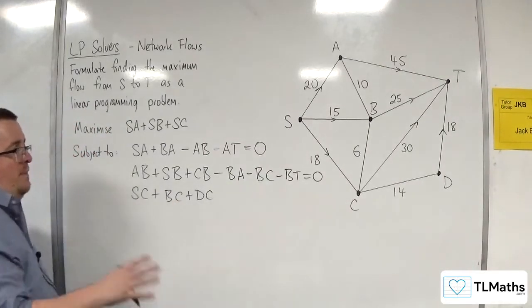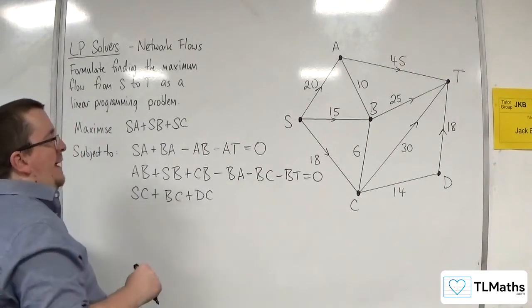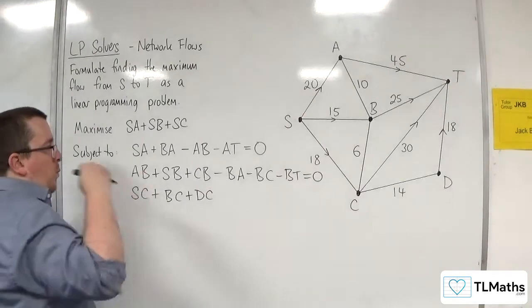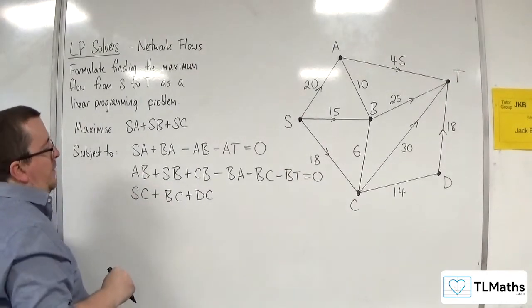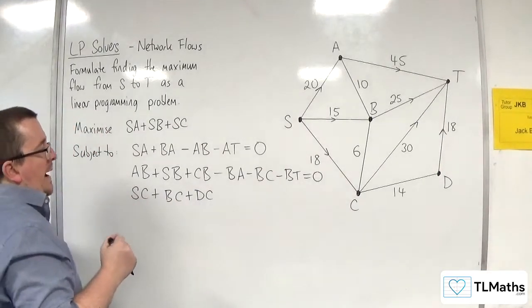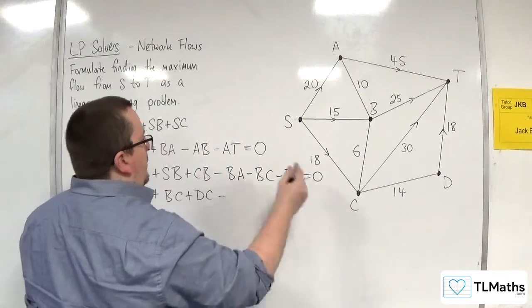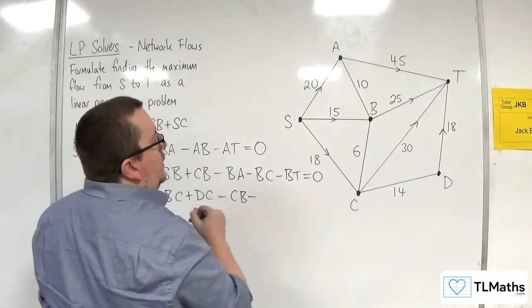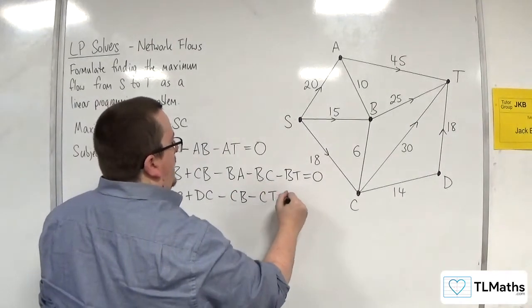So it just makes sure that I'm just not making any kind of silly errors as I go if I just do one way of doing it all the time. So we've got SC, BC, and DC. And flowing out, we've got CB, we've got CT, and CD. So that's vertex C.